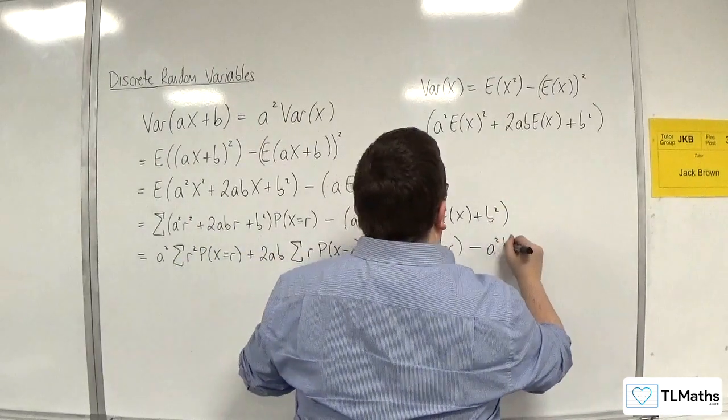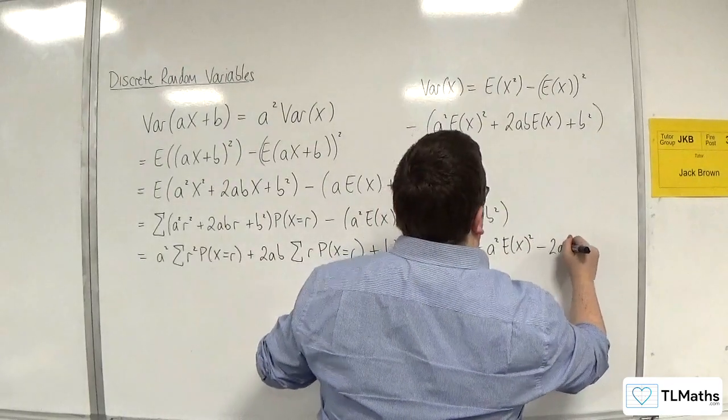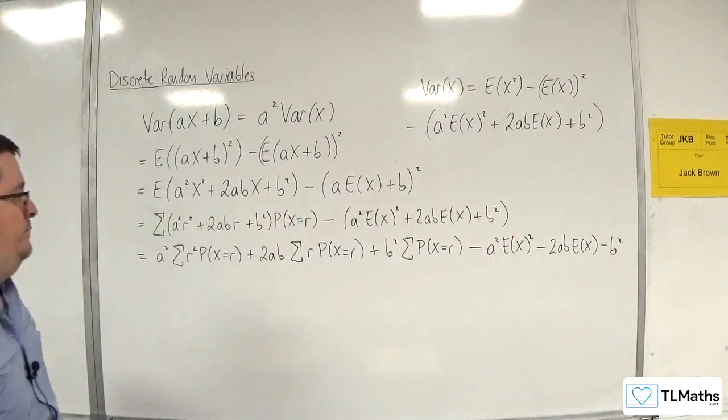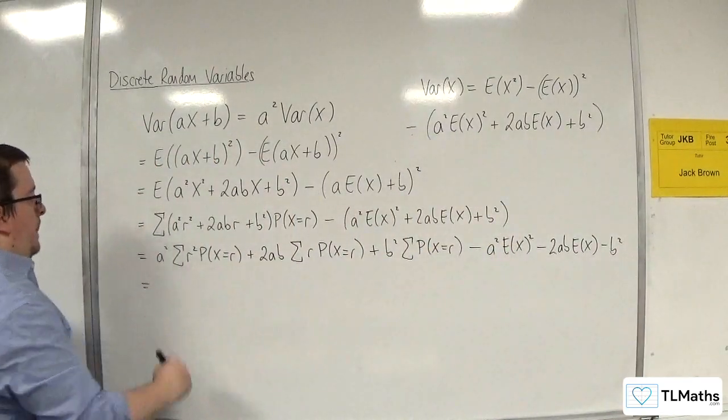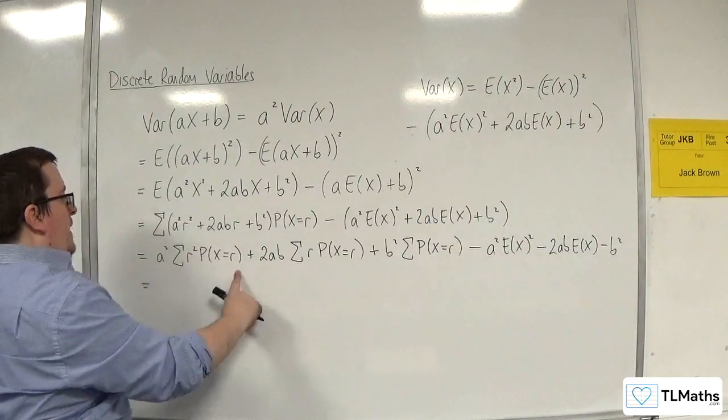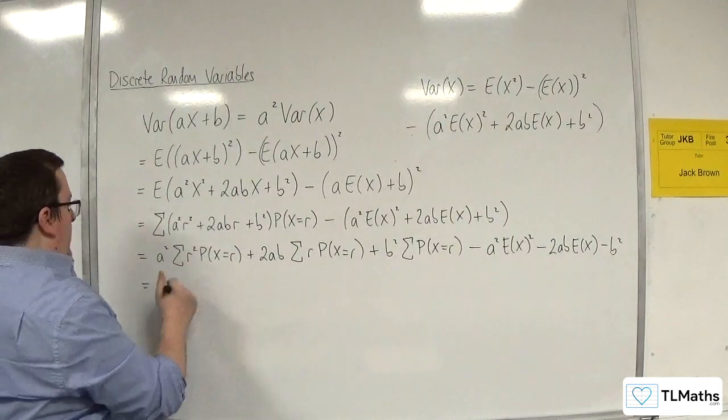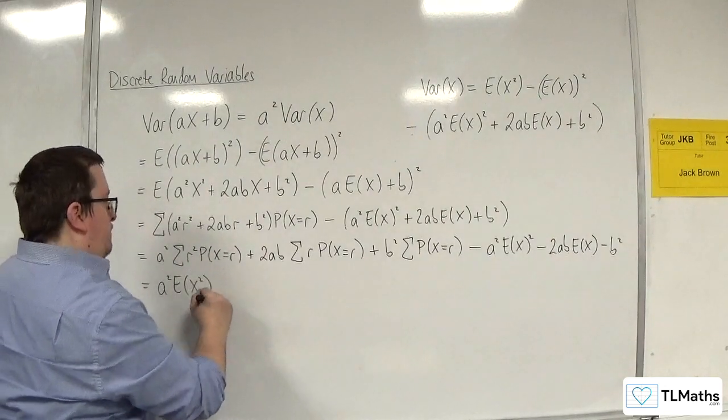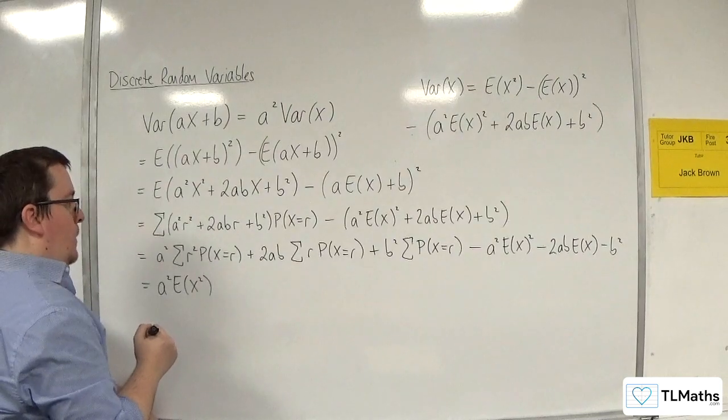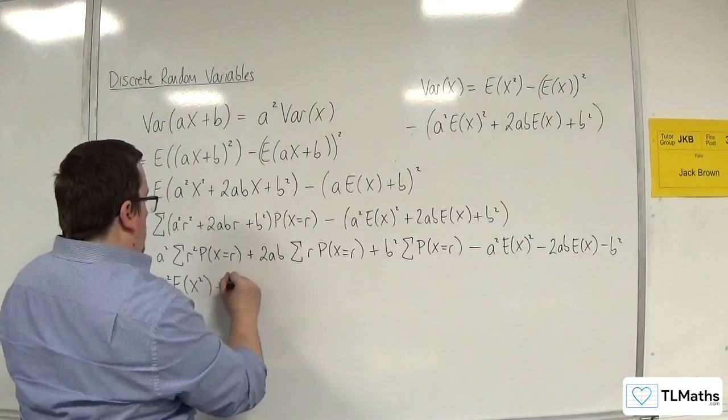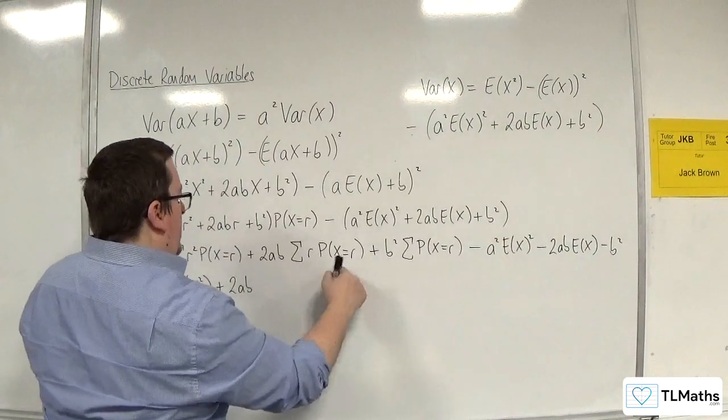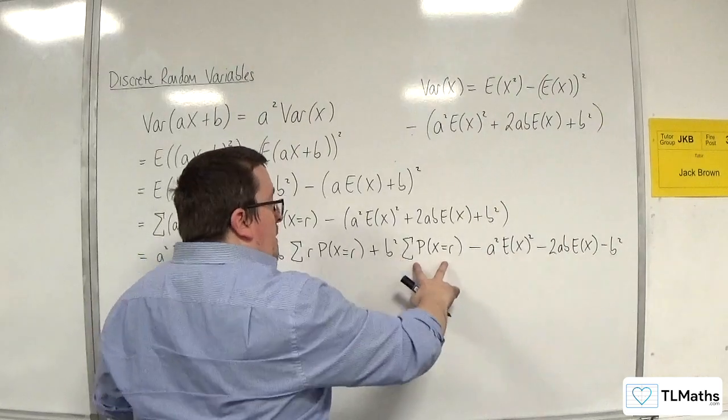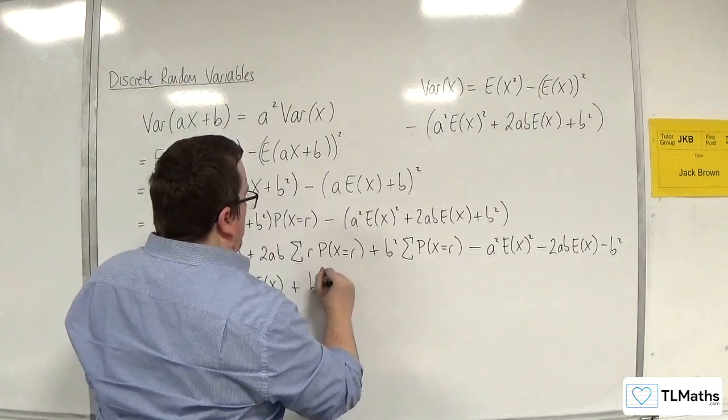So take away a squared e of x squared. Take away 2ab e of x. Take away b squared. So what have I got here? Well this is a squared times e of x squared. Here we've got 2ab times e of x. Here we've got b squared times the sum of the probabilities which is just 1. So that's b squared.